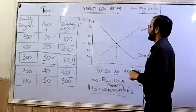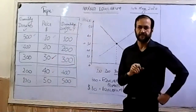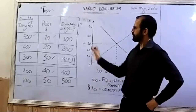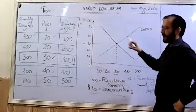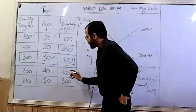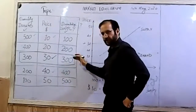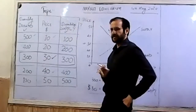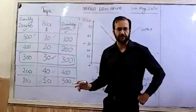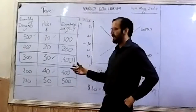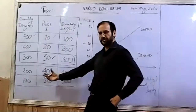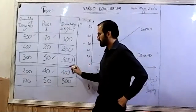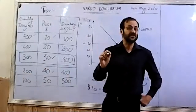If the price increases from $30 to $40, what will be the effect in the market? We can show it on both the table and the graph. At $40 the quantity supplied increases from 300 to 400, but the demand has fallen from 300 to 200. This situation is not an equilibrium - it is not balanced. If the supply is increasing and the demand is falling, this is going to be known as market disequilibrium.